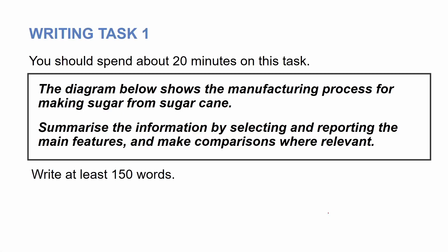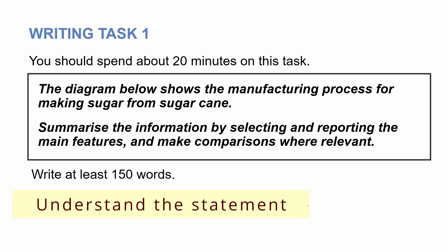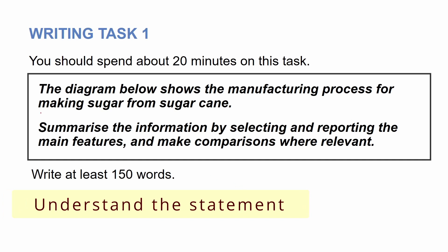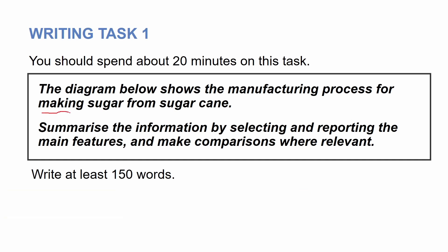This is a process writing from IELTS Academic 16. We need to spend some time on this statement to understand it. The diagram below shows the manufacturing process for making sugar from sugarcane. So clearly it's a process that shows how sugar is produced.